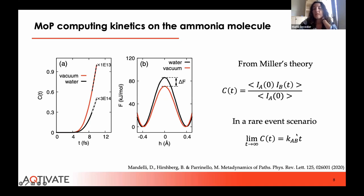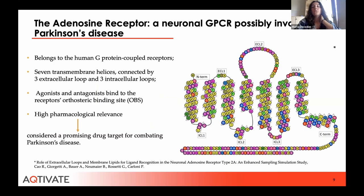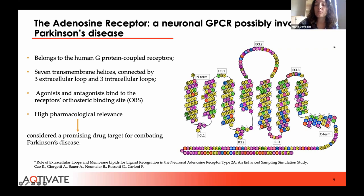The metadynamics of path method has been applied only to simplified model systems and its performance on a real biological event is still unknown — a transition that is by no means trivial. To work toward the goal of scaling up the algorithm to a real biological system and calculating the residence time of a drug at its target, we apply metadynamics of path to study protein-ligand unbinding processes, focusing on the human adenosine receptor type 2A. This receptor belongs to the GPCR family, the largest membrane receptor family, and has high pharmacological relevance as a promising drug target for combating Parkinson's disease.